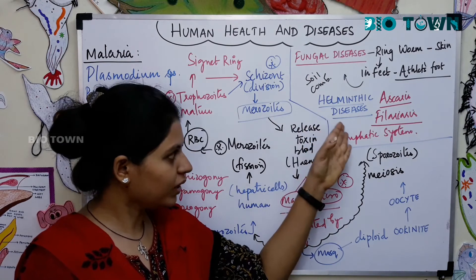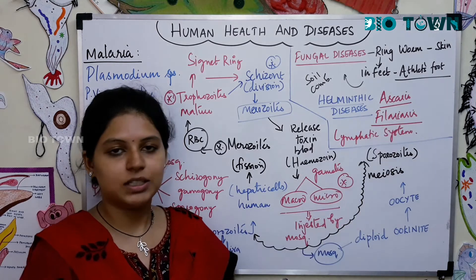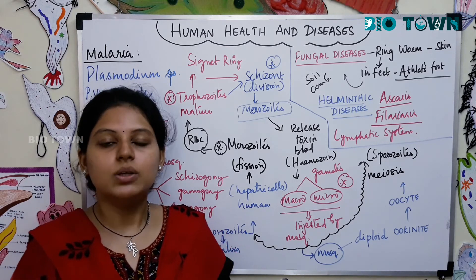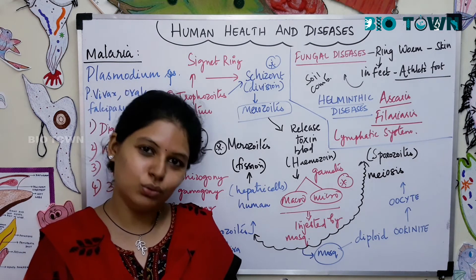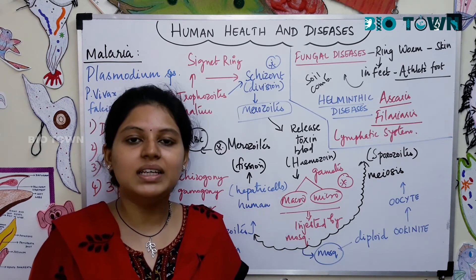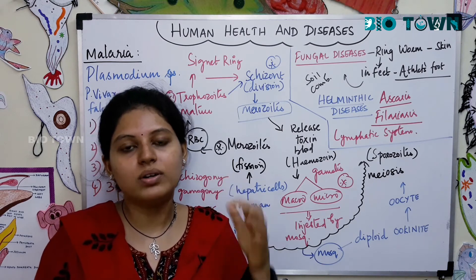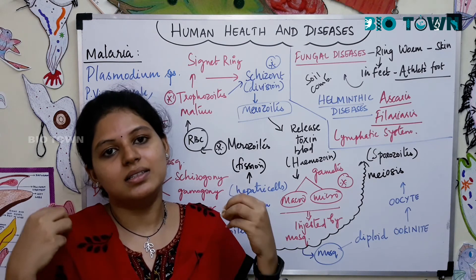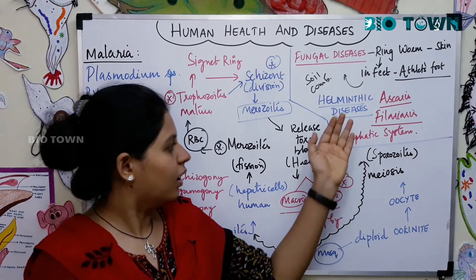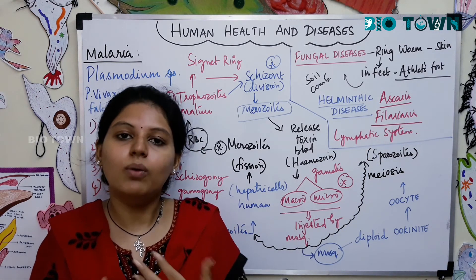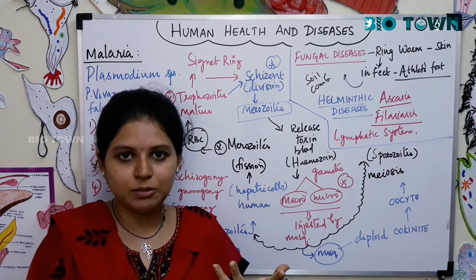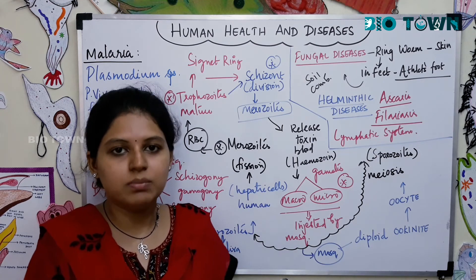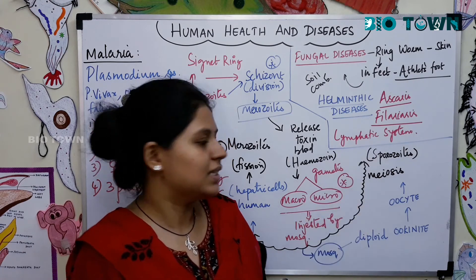Helminthic diseases involve worms. First is Ascaris — Ascaris lumbricoides. Their spore stages are present in the soil. When children come in contact with unhygienic soil and touch their mouth, these spores spread from soil into the children's mouth. They affect the gut region, where multiplication of spore stages occurs and Ascaris lumbricoides infection starts. These spores liberate male and female Ascaris, causing anal and rectal itching.